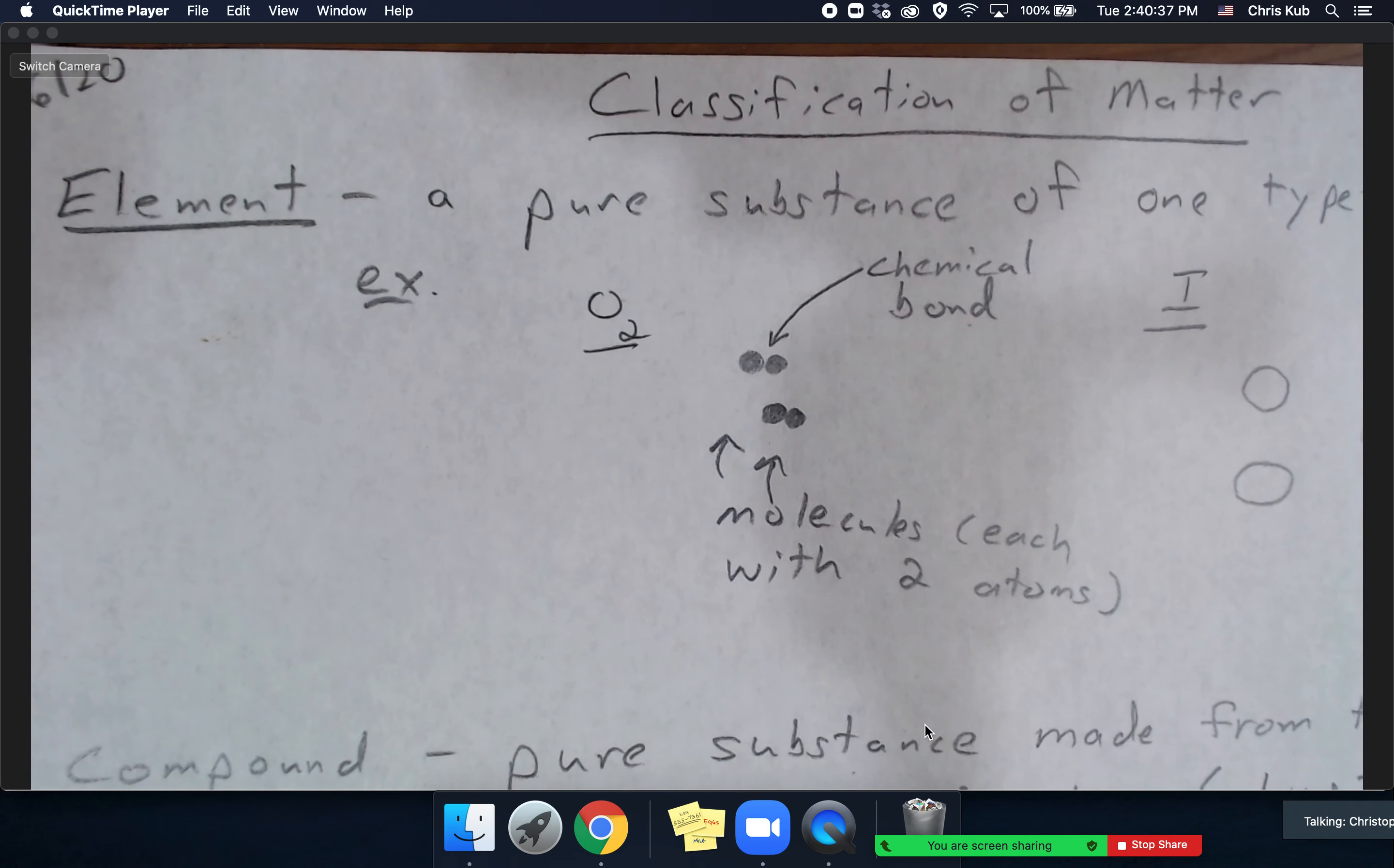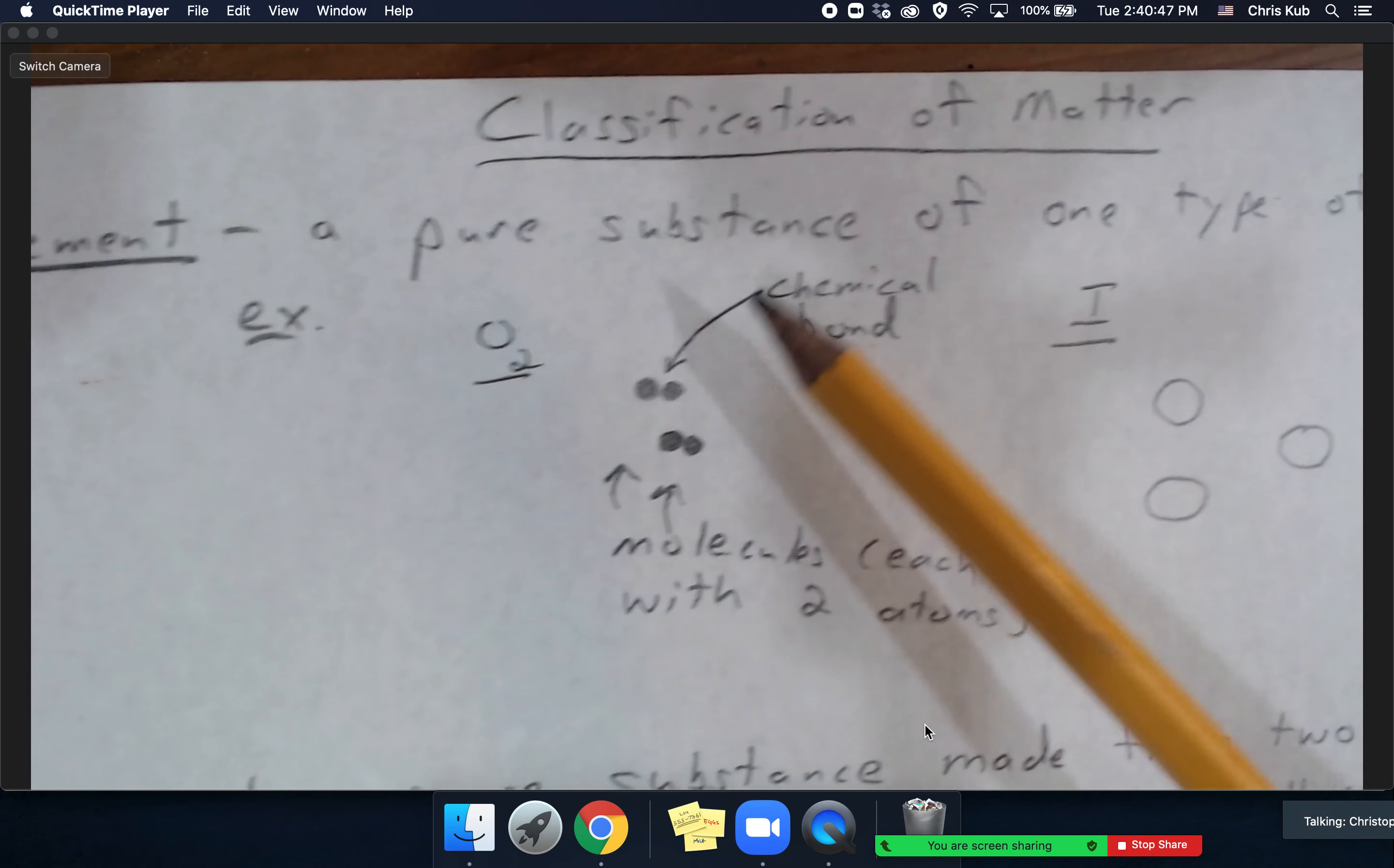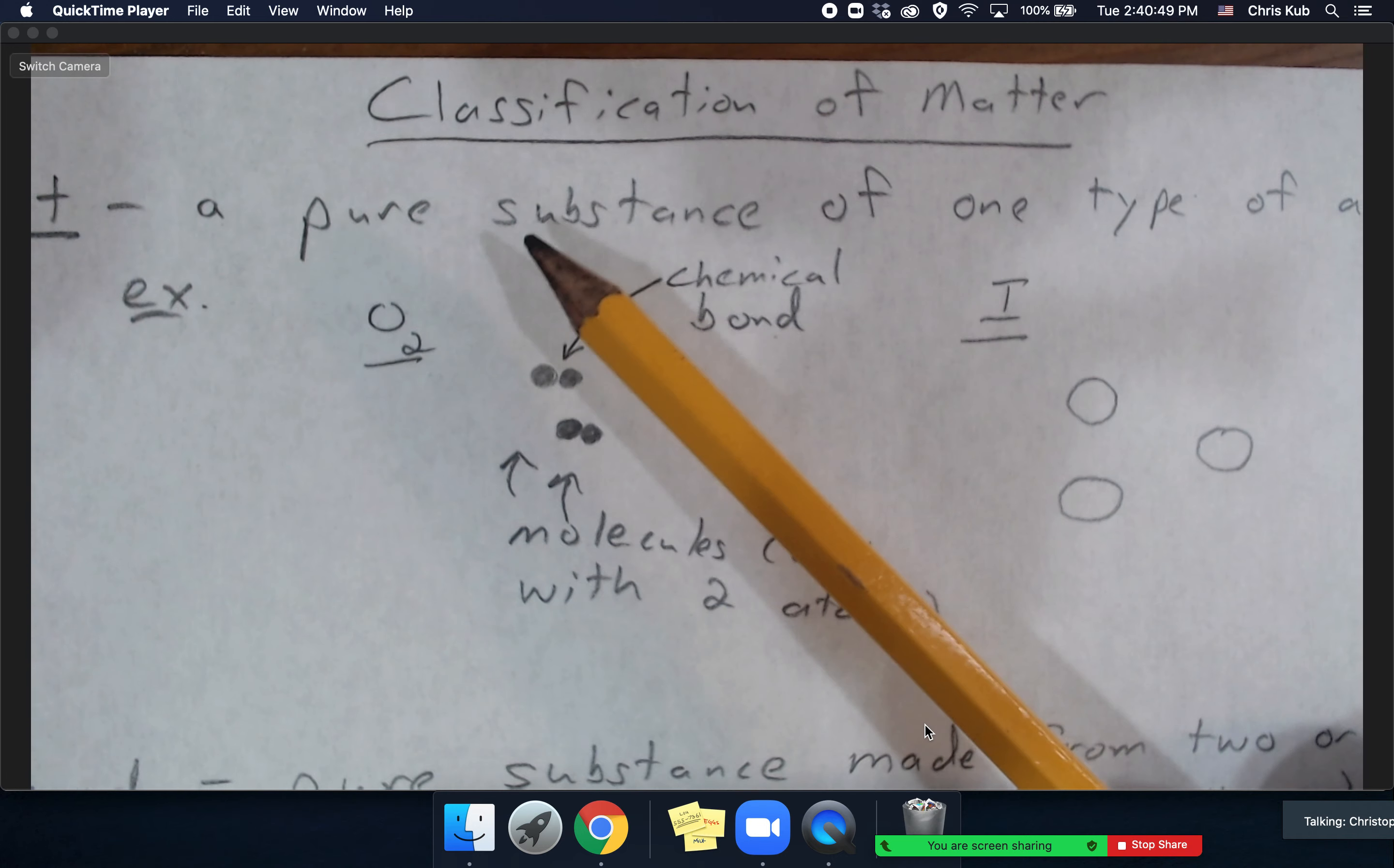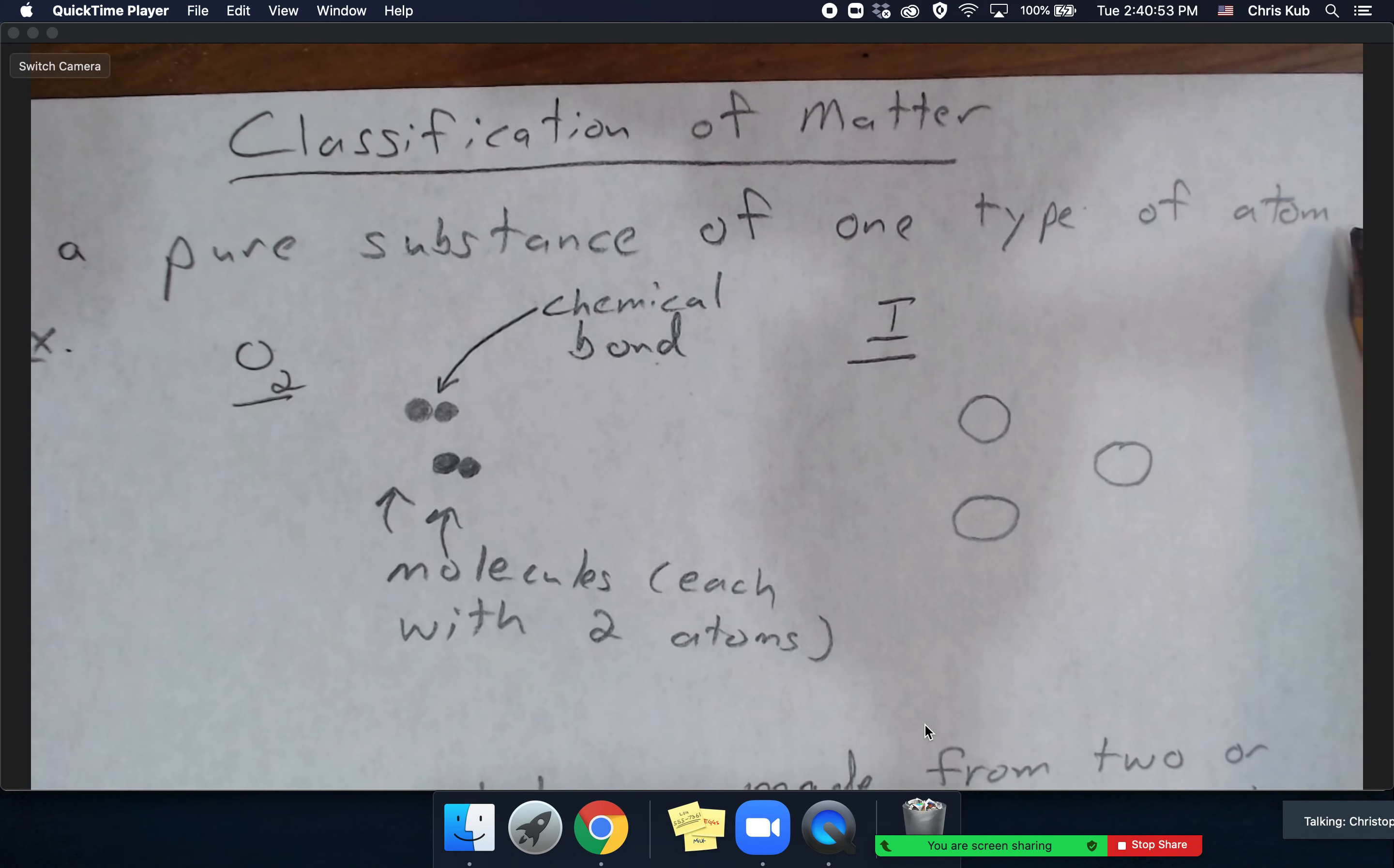Hi everyone, all of the matter around you is made up of atoms, and atoms have a variety of different types. Those types of atoms are called elements. Now elements are a pure substance of one type of atom.